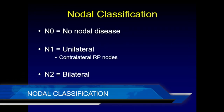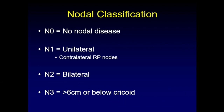Nodal classification in nasopharyngeal carcinoma differs from other head and neck squamous cell carcinoma. N0 is no nodal disease. N1 is unilateral disease — regardless of number of nodes. Importantly, retropharyngeal nodes are special: even contralateral retropharyngeal nodes count as N1 because they are so frequently involved in NPC. N2 is bilateral lateral nodal disease. For N3, either a single nodal cluster greater than six centimeters, or extension below the inferior margin of the cricoid cartilage, qualifies.